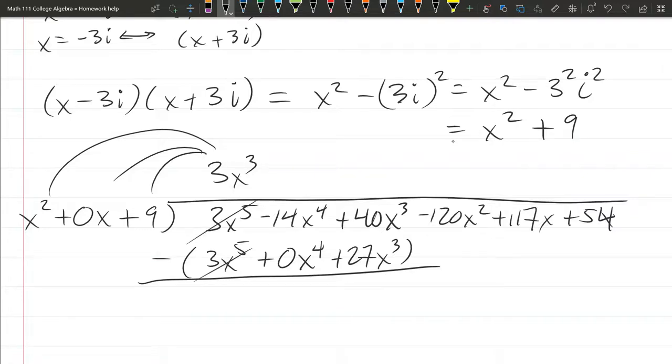So 3x to the fifth minus 3x to the fifth cancels. Negative 14x to the fourth plus 0, negative 14x to the fourth. 40x cubed minus 27 is 13x cubed. Bring down the next term, minus 120x squared.